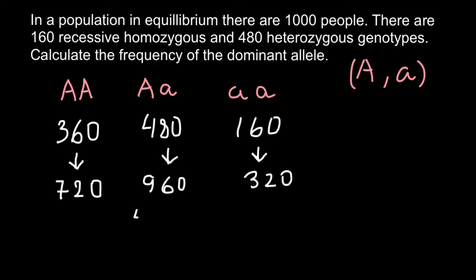In other words, we can say that 960 consists of 480 dominant alleles A and 480 recessive alleles a. So we have to add this number to this and this to this, so we can find the total quantity of dominant and recessive alleles.